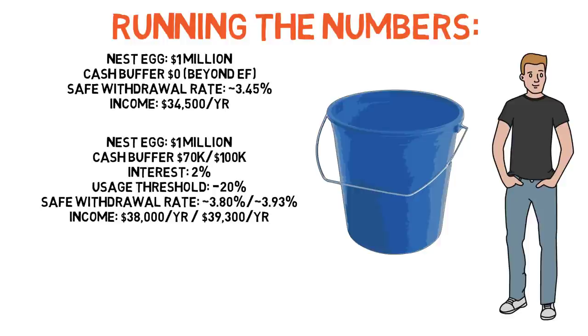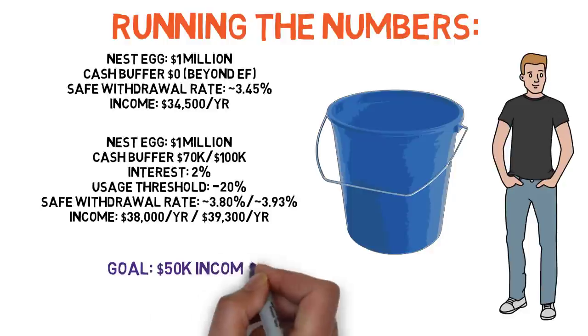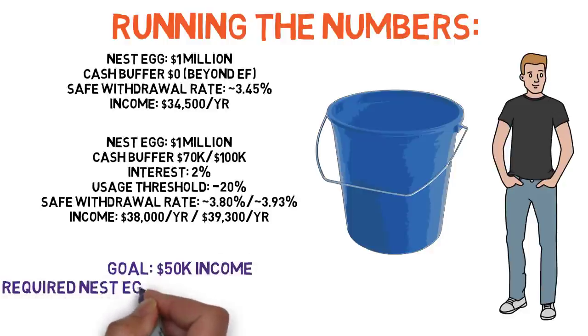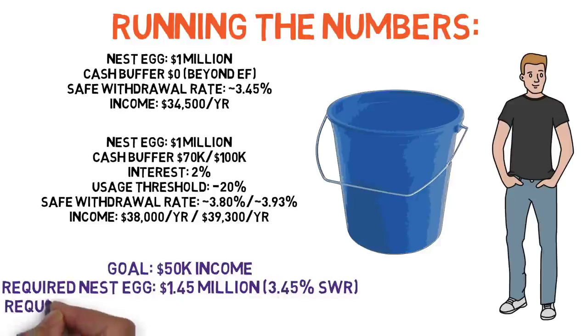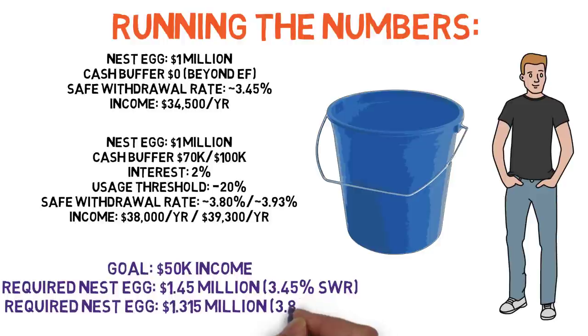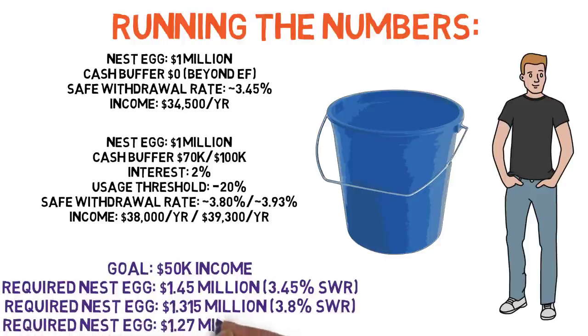And there are the ancillary benefits of being able to reach financial independence faster when your safe withdrawal rate is higher. I mean, if John wanted to live on $50,000 a year, he'd need to put away nearly $1.45 million using the figures that we just had, assuming he had no cash cushion. But if he had a $70,000 cash cushion, either because he saved it up himself or just waited a few extra months for his investments to appreciate at the very end of the cycle to build up that cash cushion, he would only need a bit over $1.3 million.